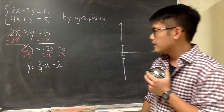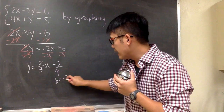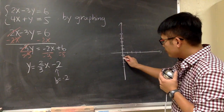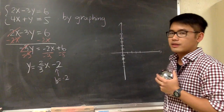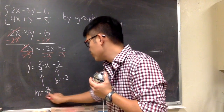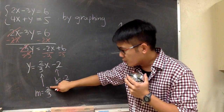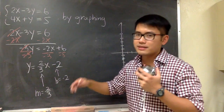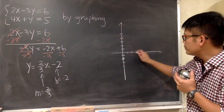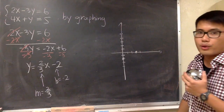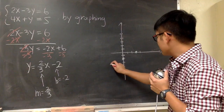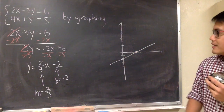I will graph the first line in white. Begin with the b value, which is going to be negative 2 — that's the y-intercept. That means we go onto the y-axis; negative 2 is right here, and I'm just going to put a point right here. And we look at the slope — m is equal to positive 2/3. That means go up 2, then the 3 means move to the right 3 times. Put another point and connect the dots. This is the first line.